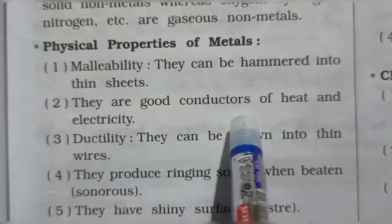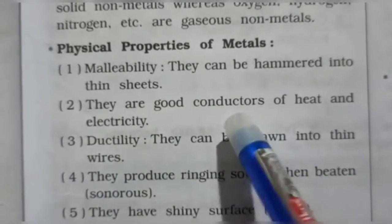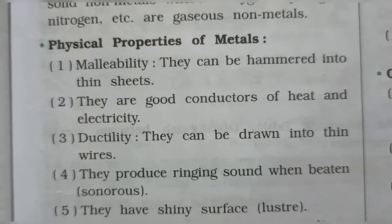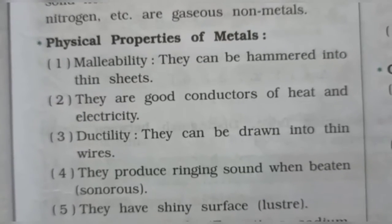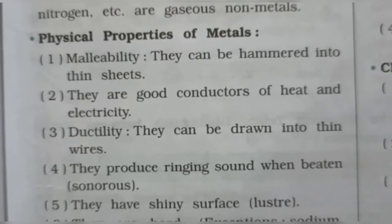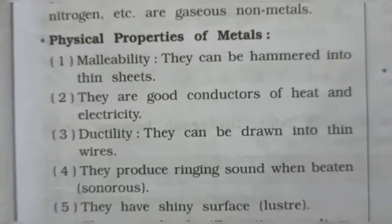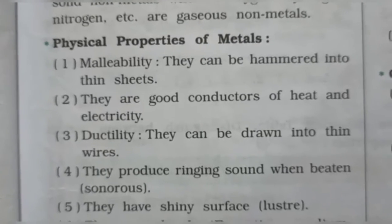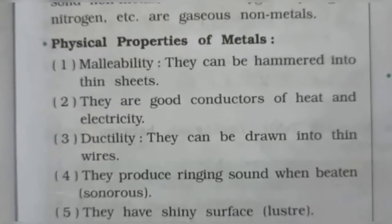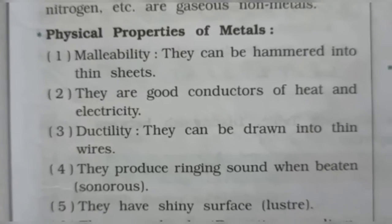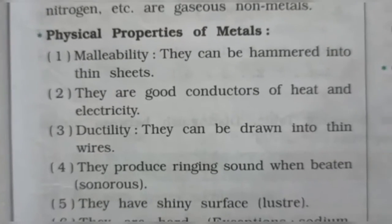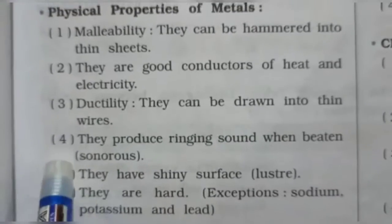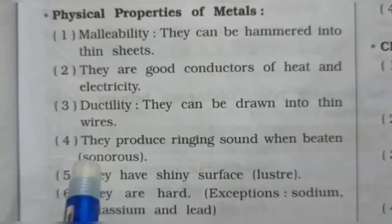The second property is that metals are good conductors of heat and electricity. We studied in the third chapter that metals are good conductors of heat. That is why we use plastic for handles or electric switches, because metals are good conductors of heat and electricity.